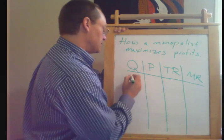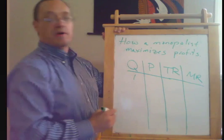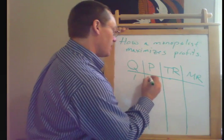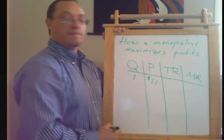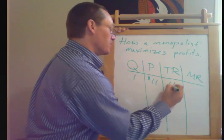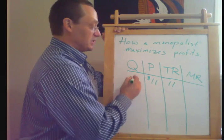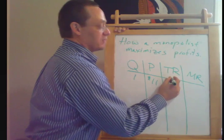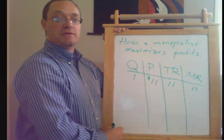So let's suppose that if we have our monopolist and they decide they want to sell one unit, they can charge 11 bucks for it. Then if they produce one unit, their total revenue is 11 bucks. And as they went from zero to one, their revenue went from zero to 11. So the marginal revenue of that first unit is eleven.